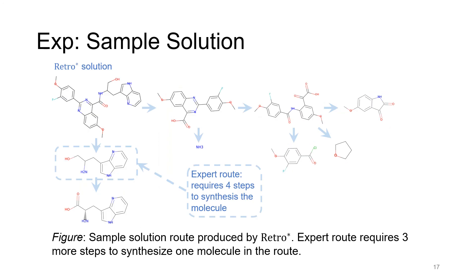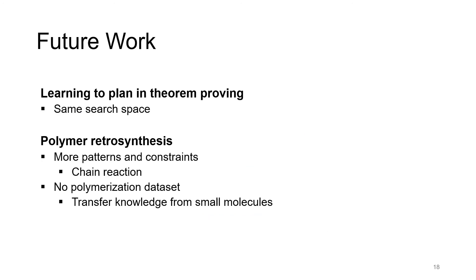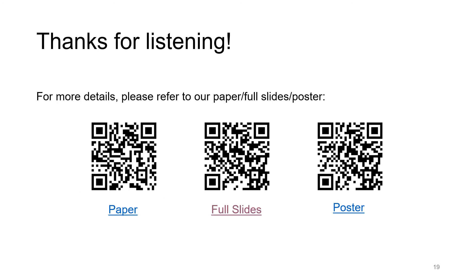Here we show the sample solution from RetroStar. The solution shares the same right branch as the expert solution, but requires three less steps to synthesize the molecule in a box. It is possible to extend this work to polymer retrosynthesis, or to other domains such as theorem proving. Please shoot me an email if you are interested. Thank you for listening. For more details, please refer to our paper, full slides, and poster. Thank you.